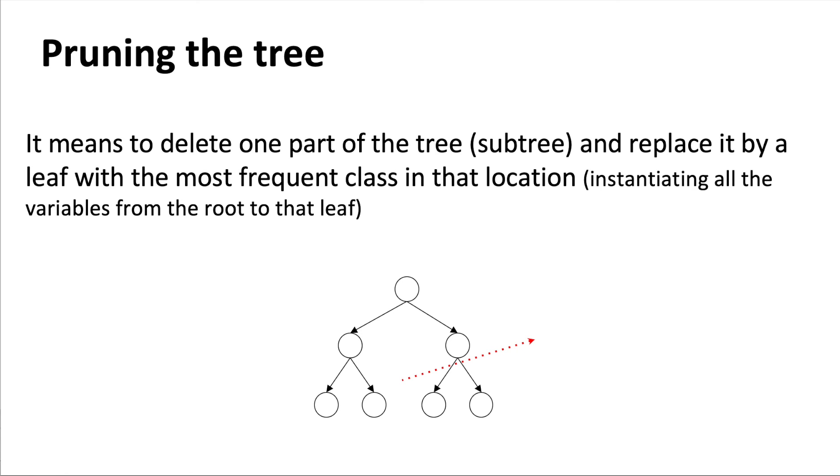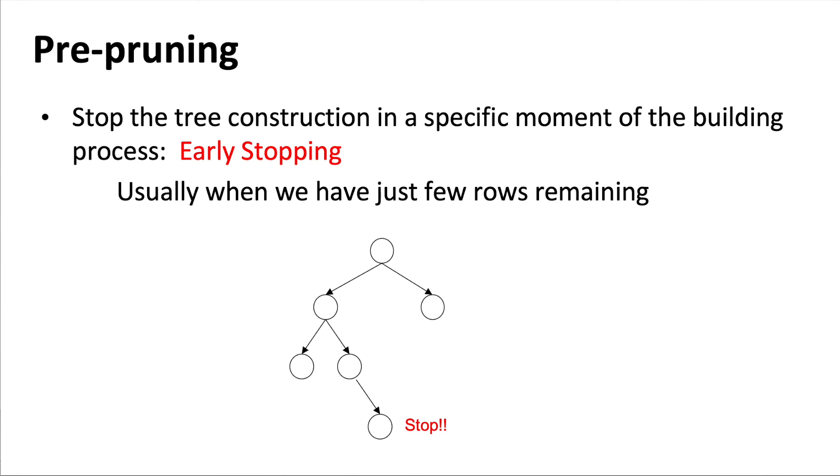So the idea is to prune the tree or delete one piece of the tree, in other words, a subtree, and replace it by a leaf with the most frequent class in that location. We are going to see a couple of examples here.